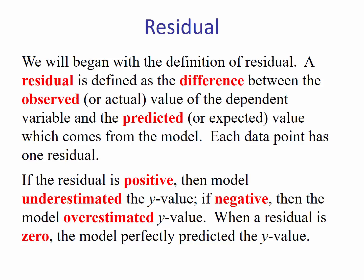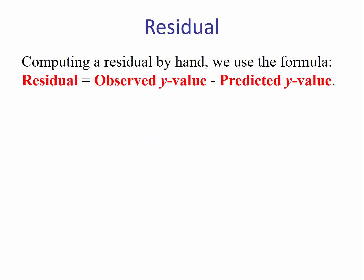Computing a residual by hand, we use the formula: Residual = Observed y-value - Predicted y-value. So this will be a y-value from one of the data points, and this will come from the regression line. It's the difference between the observed and the predicted. If we think about this in alphabetical order, O comes before P, so O (observed) minus P (predicted).